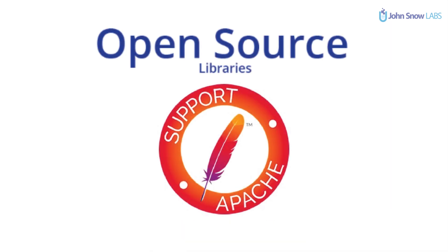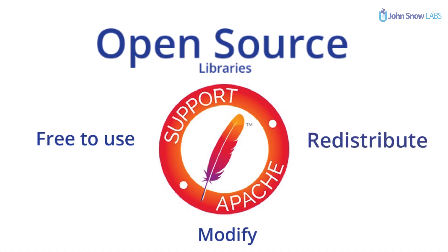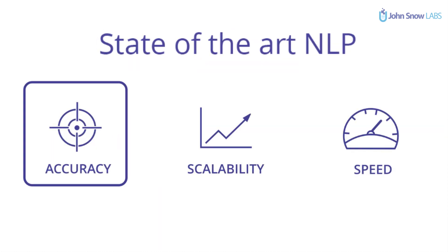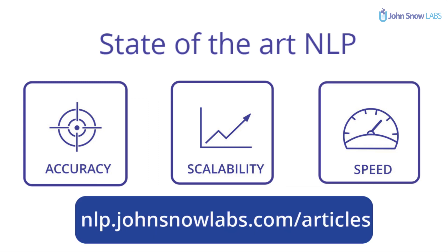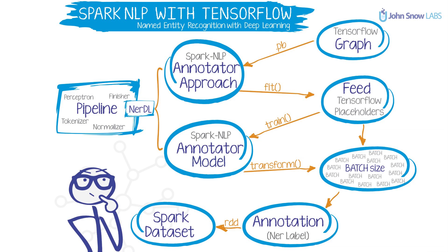Given the library is open source under the Apache license 2.0, it is free to use, modify and redistribute in any way possible, even commercially. In terms of accuracy, scalability and speed, you can follow our blog articles on the website for technical proof about Spark NLP's strong points. The library leverages Spark cluster functionalities, making it possible to scale horizontally when transforming trained models and pipelines.